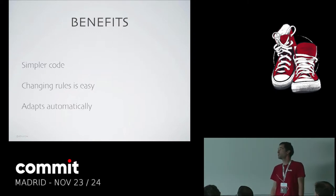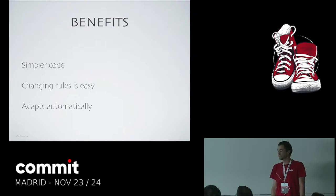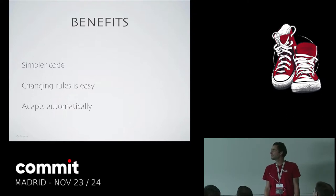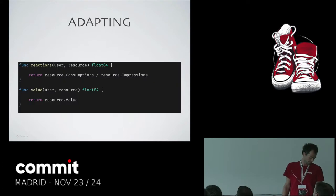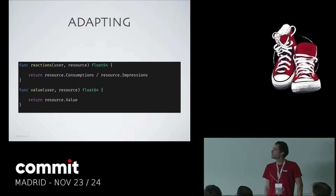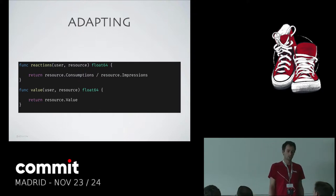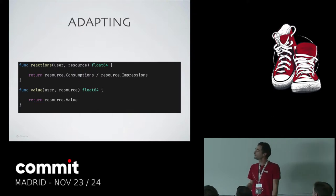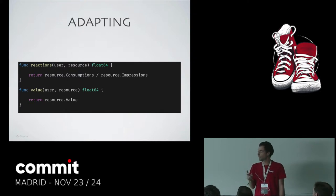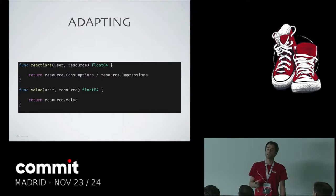What are the benefits? The code becomes much simpler. You have functions that you can test, can read easily, and can change on the fly. And even better, they can adapt automatically. Instead of static scoring functions, what if we add one that measures how users are reacting to this allocation in real time? My resource has been shown X times — did users react to it or not? With that, you're already putting real-time feedback into your allocation algorithm.